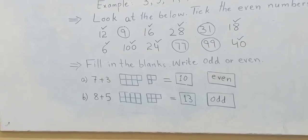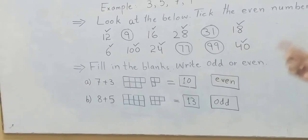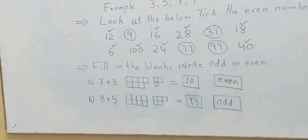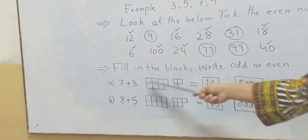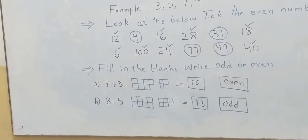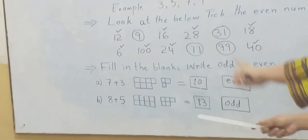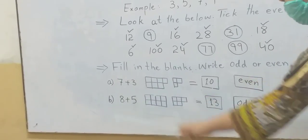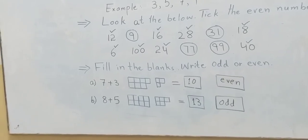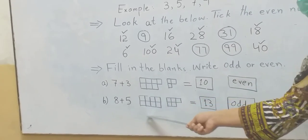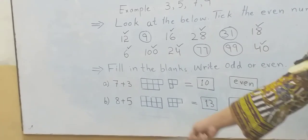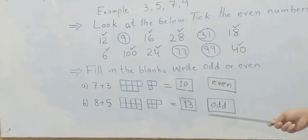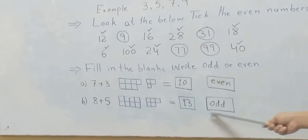At the end of the session, fill in the blanks. This is an exercise where you have to recognize even and odd numbers by filling in the blanks — write odd or even. For example, seven plus three: you have to count these two numbers and find out either the result is even or odd. Number two: eight plus five. You have to sum up the numbers and recognize if the answer is even or odd. The answer is thirteen, and thirteen is an odd number.